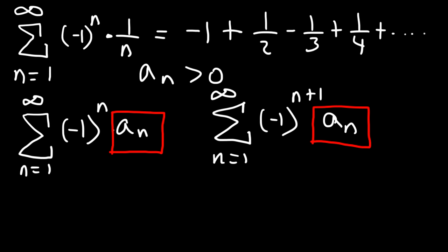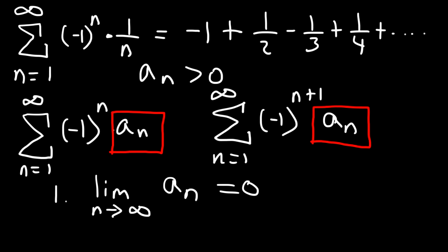For the alternating series test to work, two conditions must be met. The first is that it has to pass the divergence test: the limit as n goes to infinity of a sub n must equal zero. If it doesn't, the series automatically diverges. The second condition is that the sequence has to be decreasing — the next term must be less than or equal to the previous term.